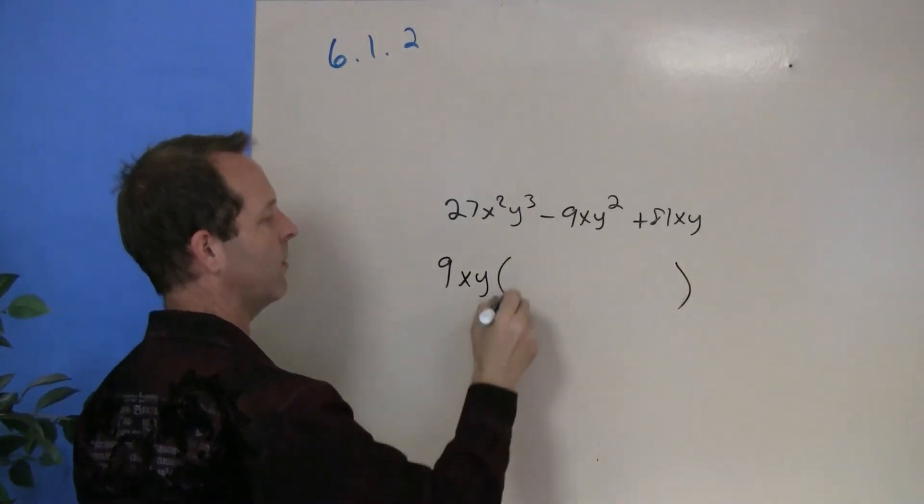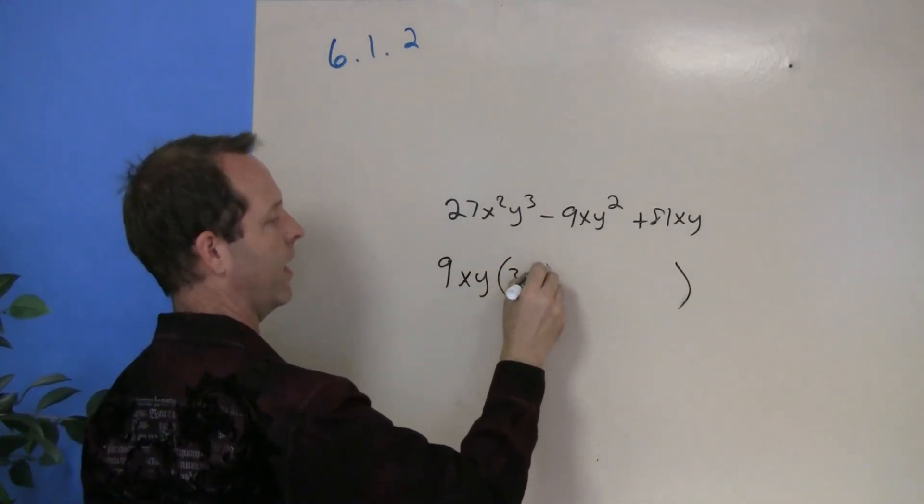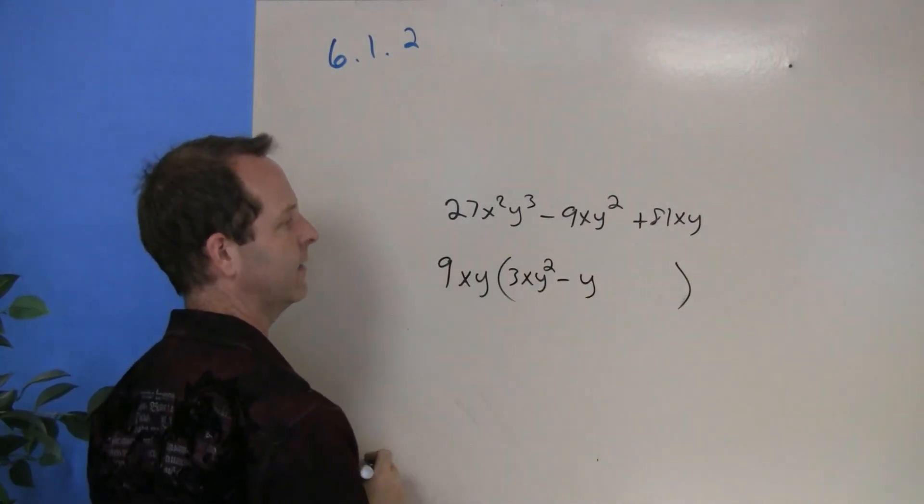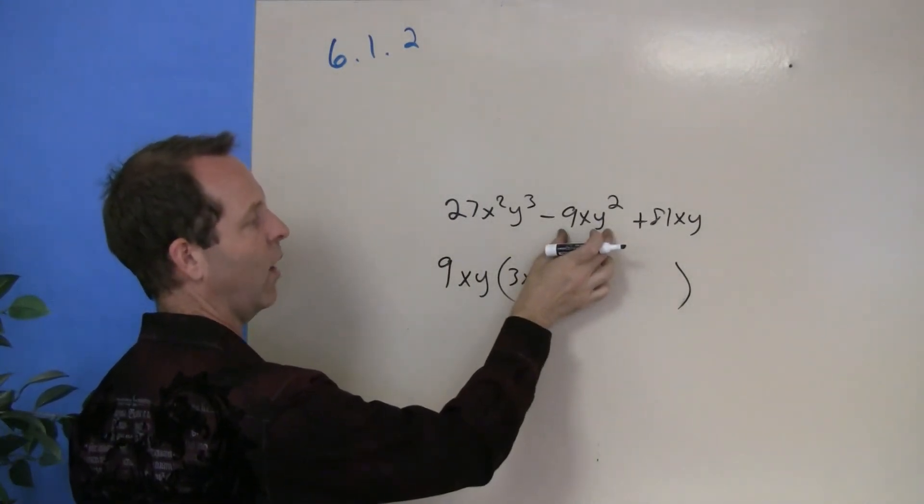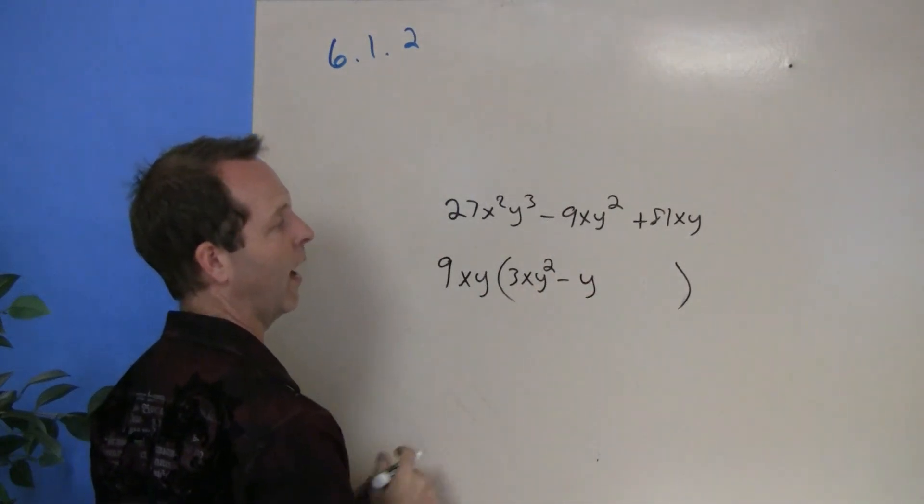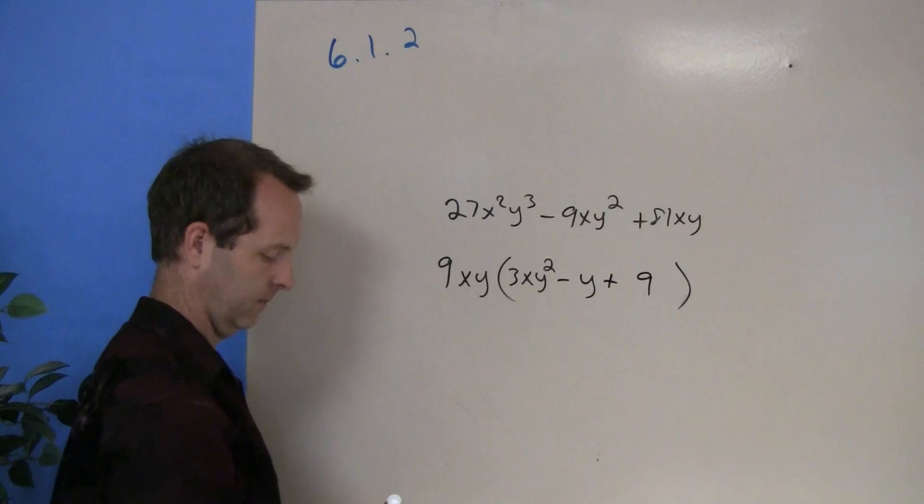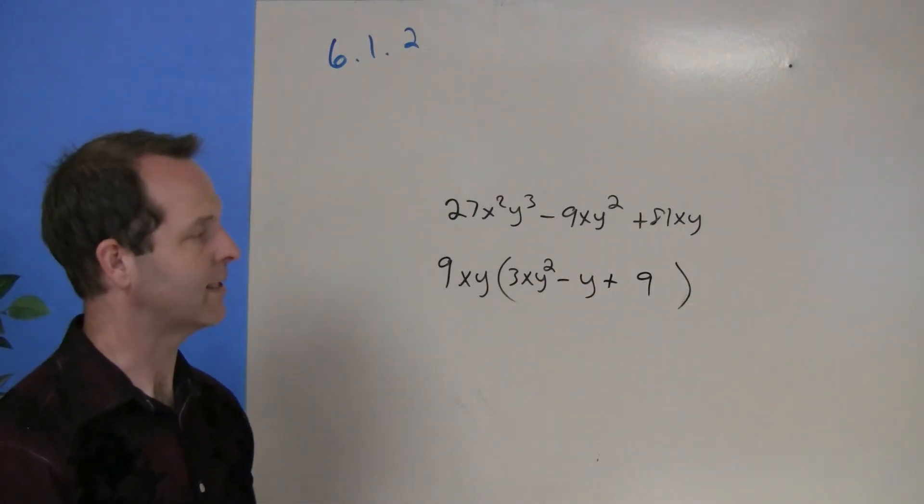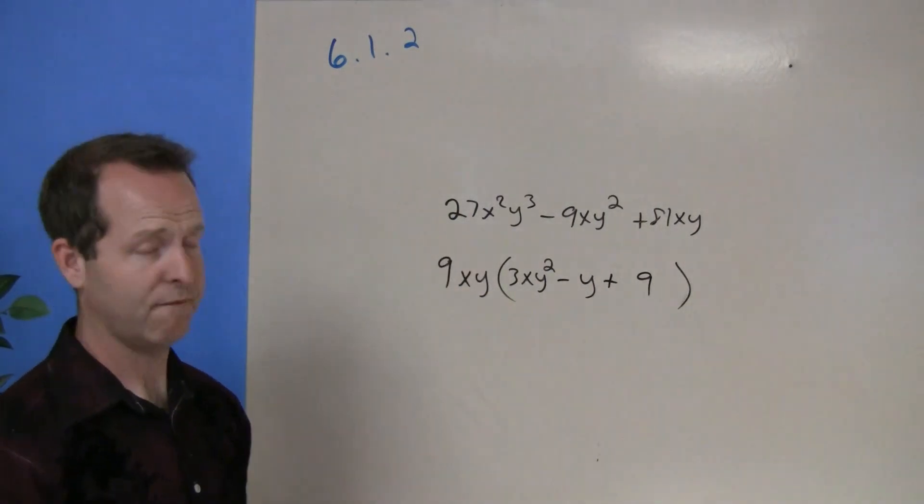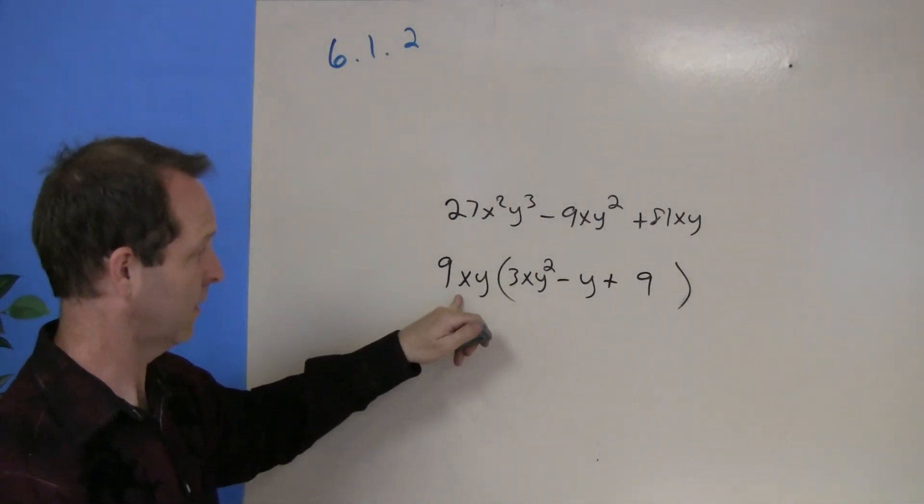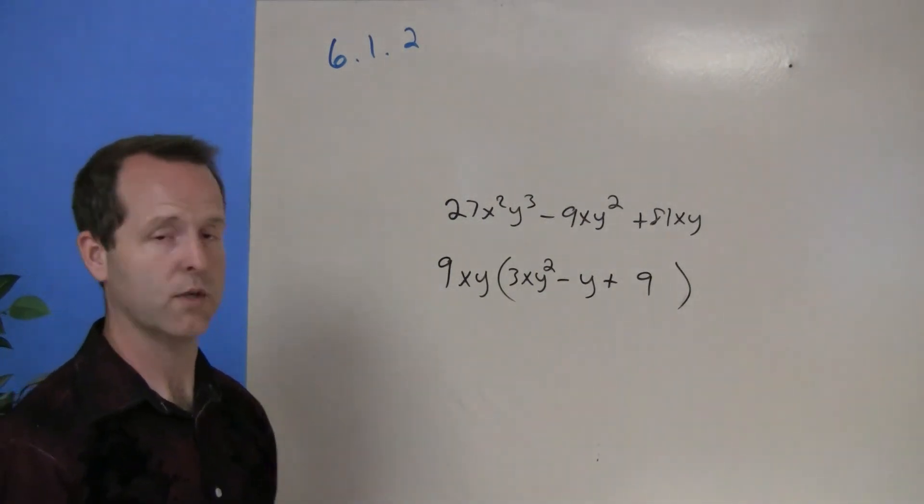And then what's remaining will be 3xy² - y. Because I factor out the 9xy, all that's left is another y, plus 9. So then I was able to take those statements, factor out the greatest common factor, so that I have this greatest common factor times what's remaining. And that's the end of this moment.